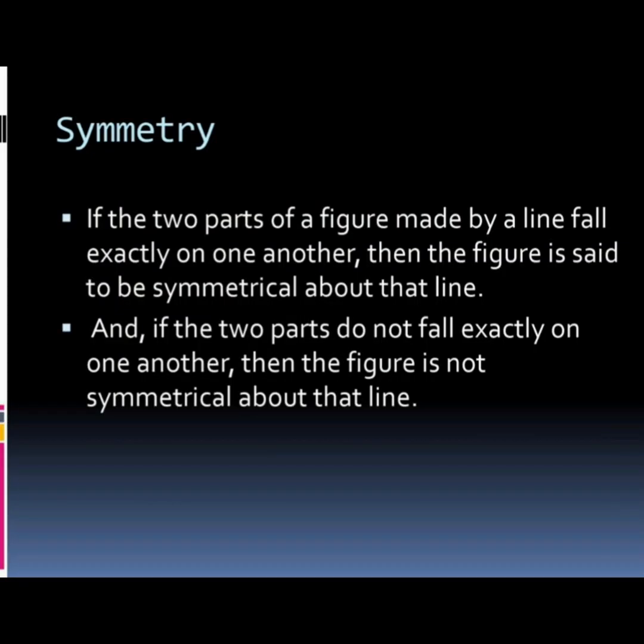So, what is symmetry? If the two parts of a figure made by a line fall exactly on one another, then the figure is said to be symmetrical about that line. And if the two parts do not fall exactly on one another, then the figure is not symmetrical about that line.